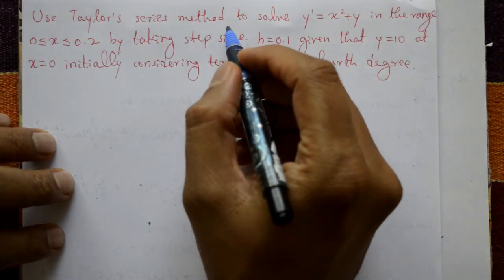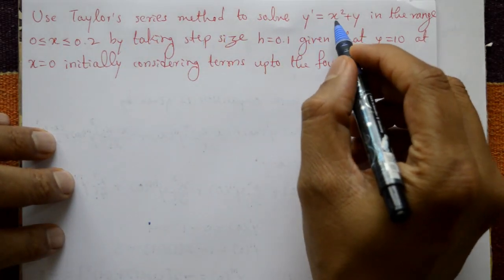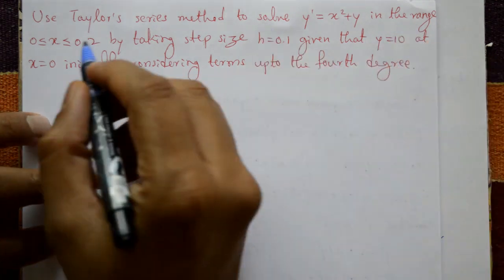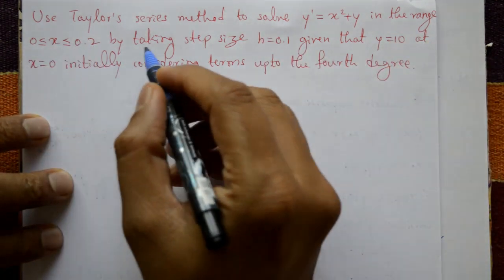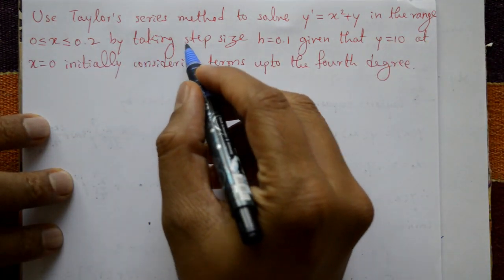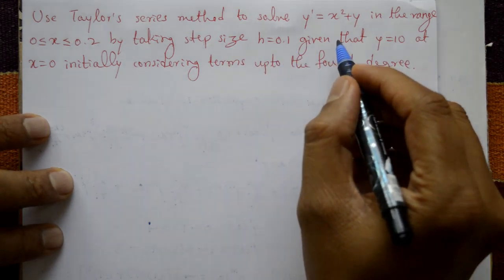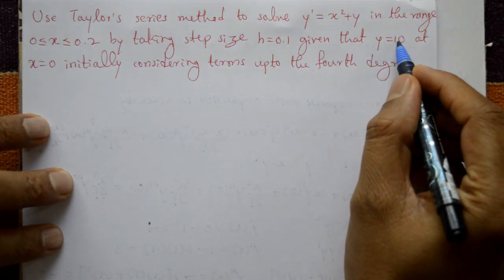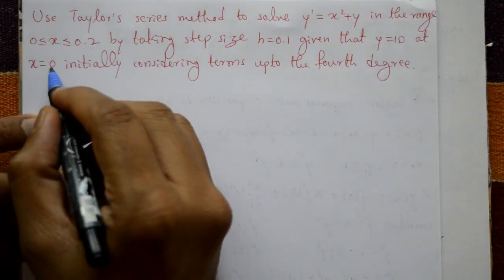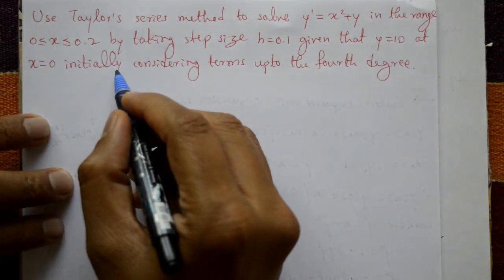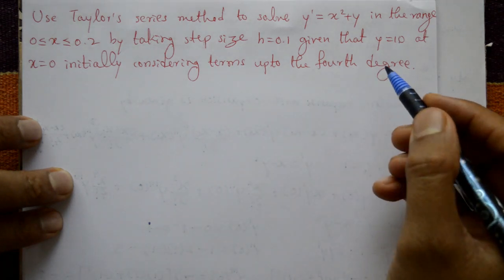Use the Taylor series method to solve y' = x² + y in the range 0 ≤ x ≤ 0.2, by taking step size h = 0.1, given that y = 10 at x = 0 initially, considering terms up to the 4th degree.